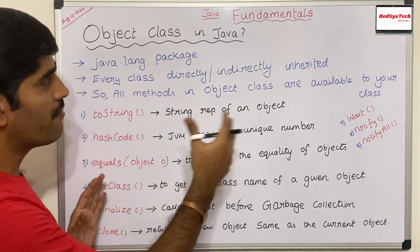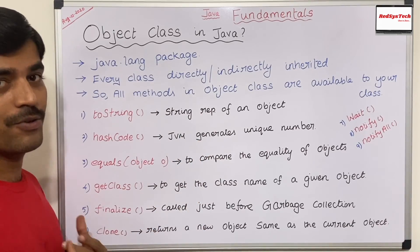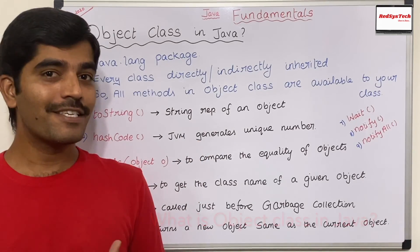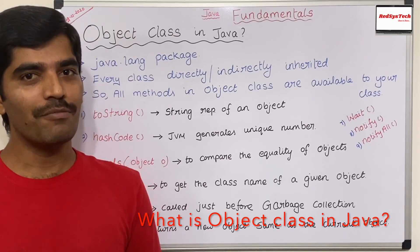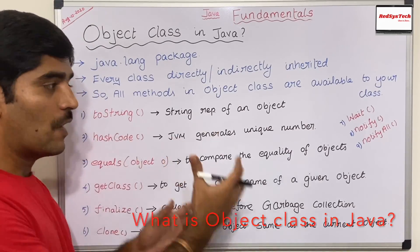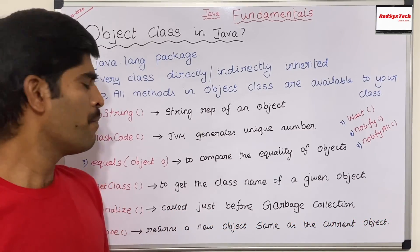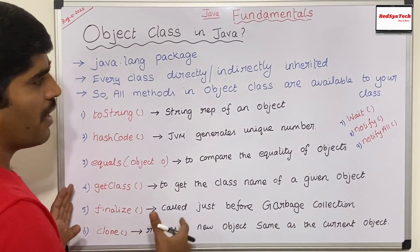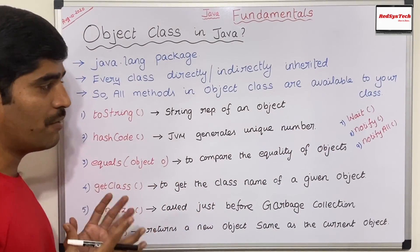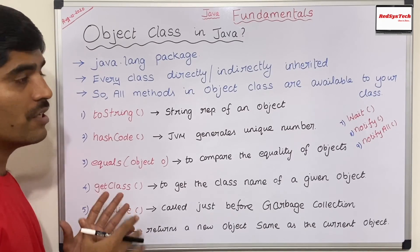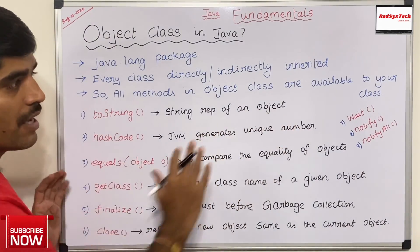Whatever methods are defined in the Object class are always available to our class. We need to understand clearly what each method does so we can use them in our real-time implementation without writing the logic ourselves. There are mainly nine methods which are useful to us, and I will go through them one by one.